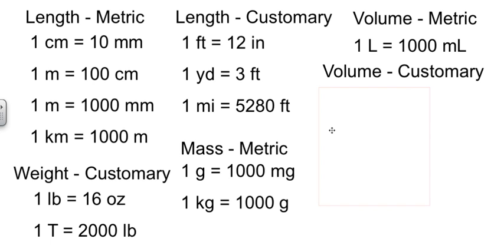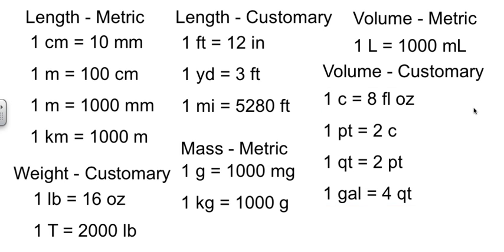For customary volumes, these are your kitchen measurements that are, again, so much fun to work with. One cup is 8 fluid ounces. Don't get fluid ounces confused with weight ounces—they're different. One cup is 8 fluid ounces. One pint is 2 cups. One quart is 2 pints. And one gallon is 4 quarts.